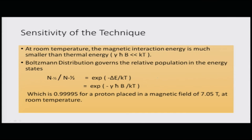NMR is not a very sensitive technique because the population excess in the ground state is very small. However, this drawback can be overcome by lowering the temperature or increasing the strength of the magnetic field, since the energy gap depends on both temperature and field strength. Experiments are done operating at low temperature and very high magnetic field strength, though temperature cannot always be lowered because you may not want the state of the matter to change.